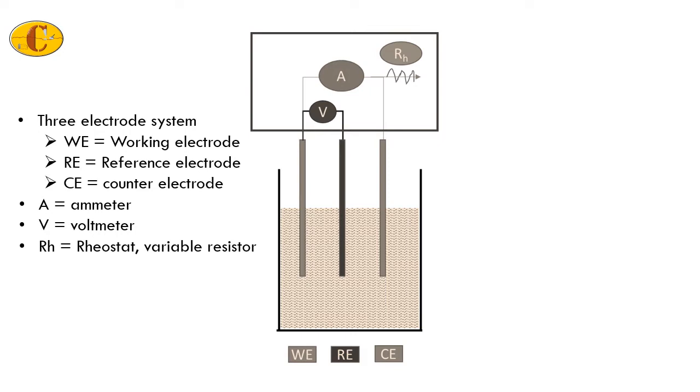When you attach it to a potentiostat, the potentiostat has a voltmeter, an ammeter, and a rheostat, which is a variable resistor. So whenever you apply a potential, it is this variable resistor that will change the current that is flowing through the circuit.